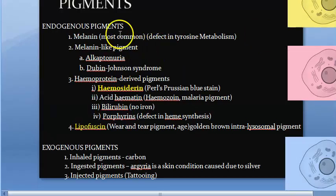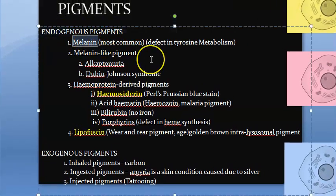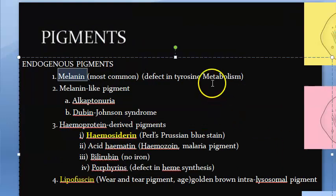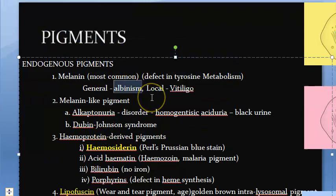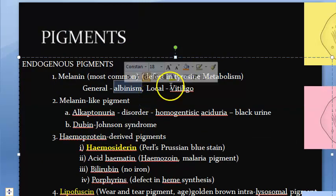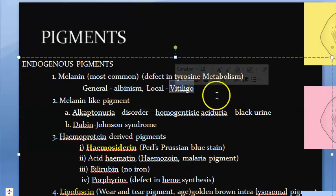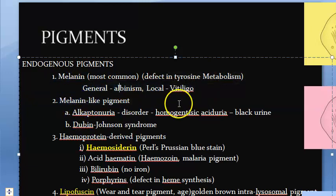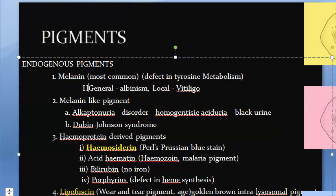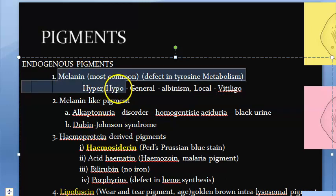Now let us look at all the pigments — just the list. Under endogenous pigments, you have melanin, which is a very common pigment. If there is excess or less of melanin it is because of a defect in tyrosine metabolism. You may have heard of albinism, where the entire body is very pale, and vitiligo, where there are local patches. There can be hyperpigmentation or hypopigmentation.